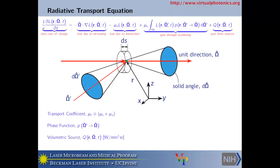And so this brings us to this wonderful equation — the radiative transport equation. Don't be intimidated; it's essentially a global balance for propagation of photons. On the left-hand side we have a term which is the time rate of change — the partial derivative of the radiance, which is a function of location r (an x, y, z vector), angle (represented by polar and azimuth angles in spherical coordinates), and time.